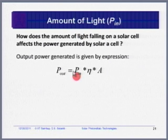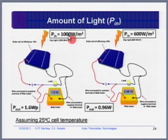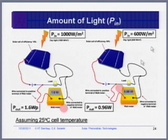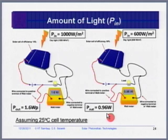The amount of light affects the output. Consider a 16% efficient cell of 100 cm² area. At 1000 W/m² and 25°C, you get 1.6 watt peak. With the same solar cell at 600 W/m² input — 60% of the standard — you get 60% of the output, which is 0.96 watt. We are only talking about variation in light intensity here; temperature has a separate effect on performance reduction that we will discuss later.